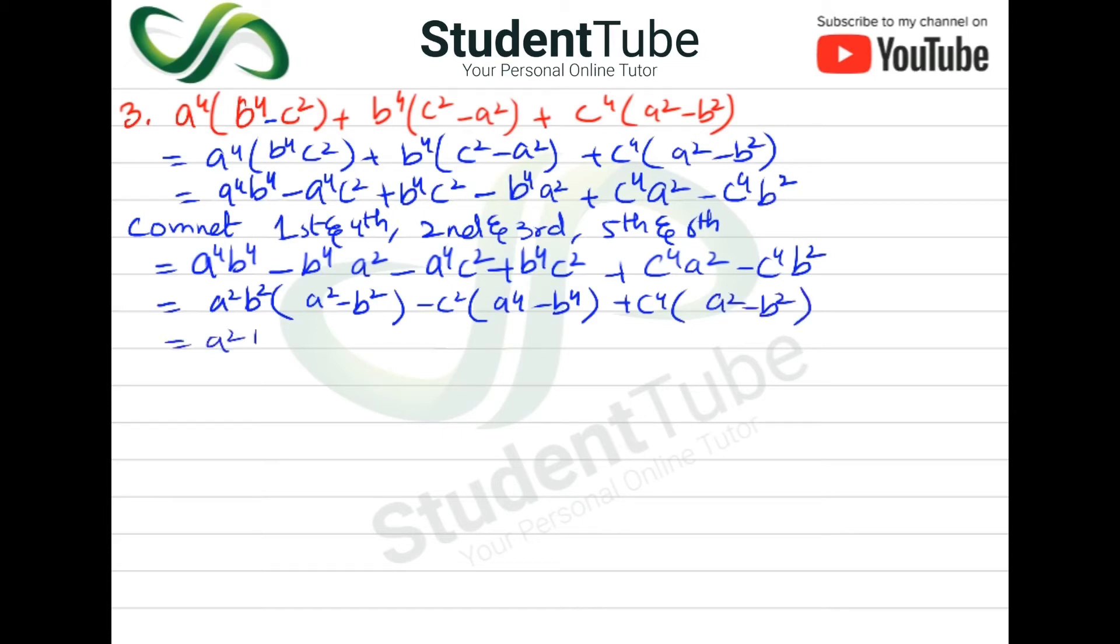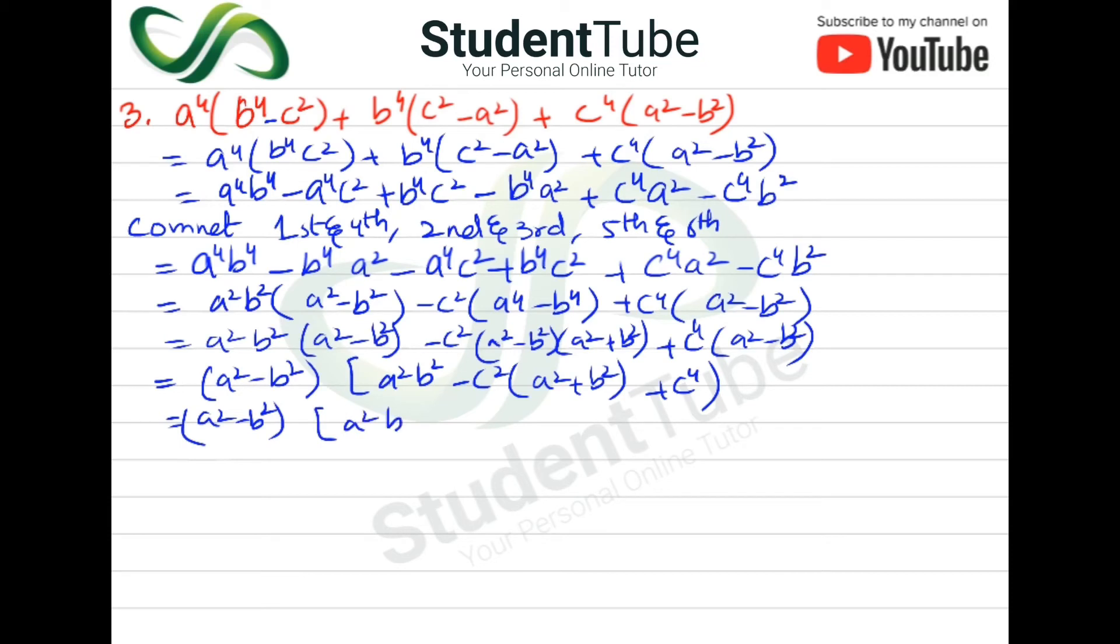We can factor using a^2 minus b^2 identity. This becomes (a^2-b^2) as a common factor. When we expand and simplify, we get expressions involving a^2, b^2, and c^2 that can be further factored using algebraic identities.